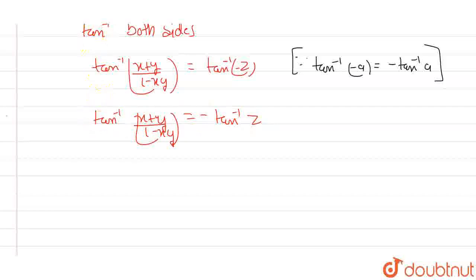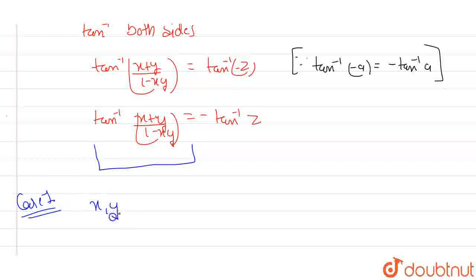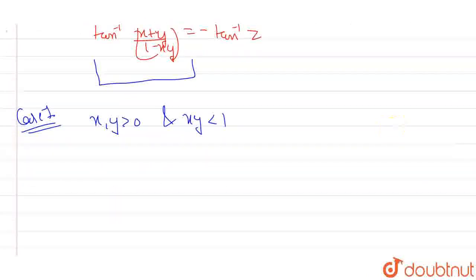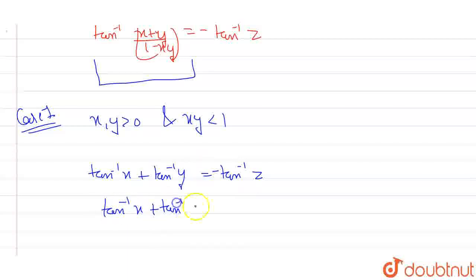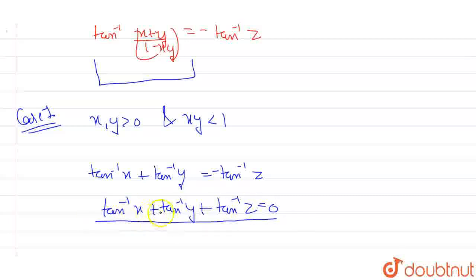I have three possible cases. In case one, suppose x and y are greater than zero and the product xy is less than one. In that case, the left-hand side becomes tan inverse of x plus tan inverse of y, using the formula tan inverse of (a+b)/(1-ab) equals tan inverse a plus tan inverse b. Putting the minus tan inverse z to the left-hand side, tan inverse x plus tan inverse y plus tan inverse z equals zero.